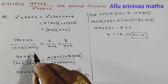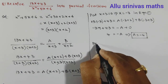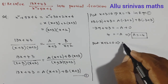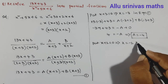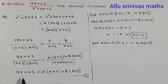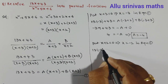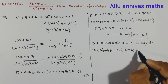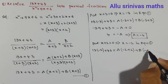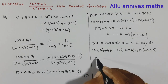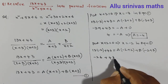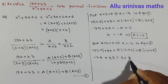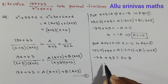Next we find B. Take the second factor x+2=0, so x = -2. Substituting into equation 1: 13(-2)+43 = A(-2+2) + B(-2+3). That gives -26+43 = A(0) + B(1). The A term vanishes and -2+3 equals 1, so B = 43-26 = 17.